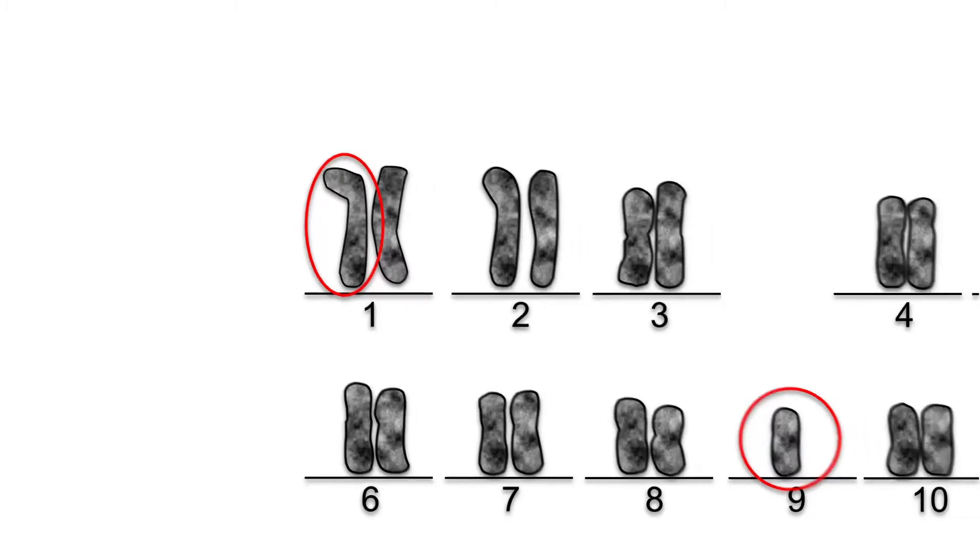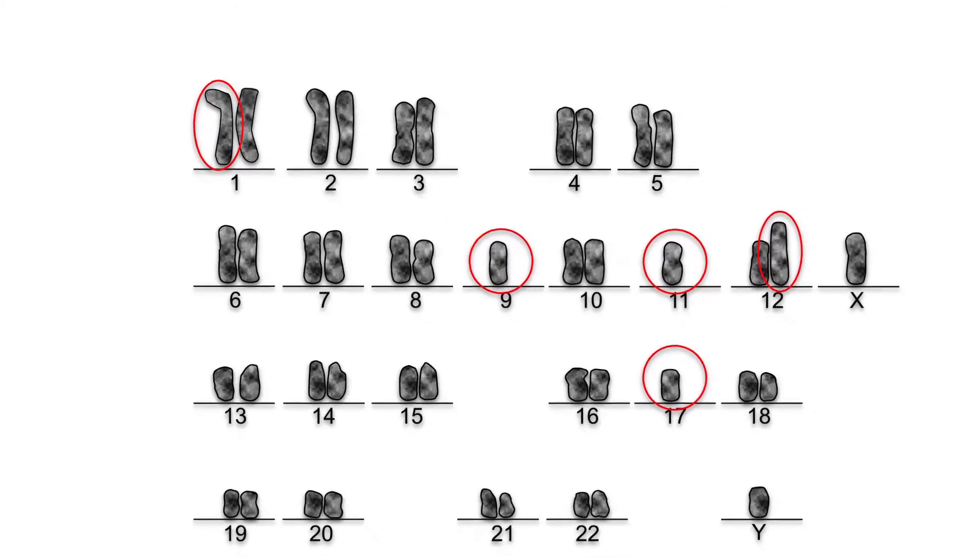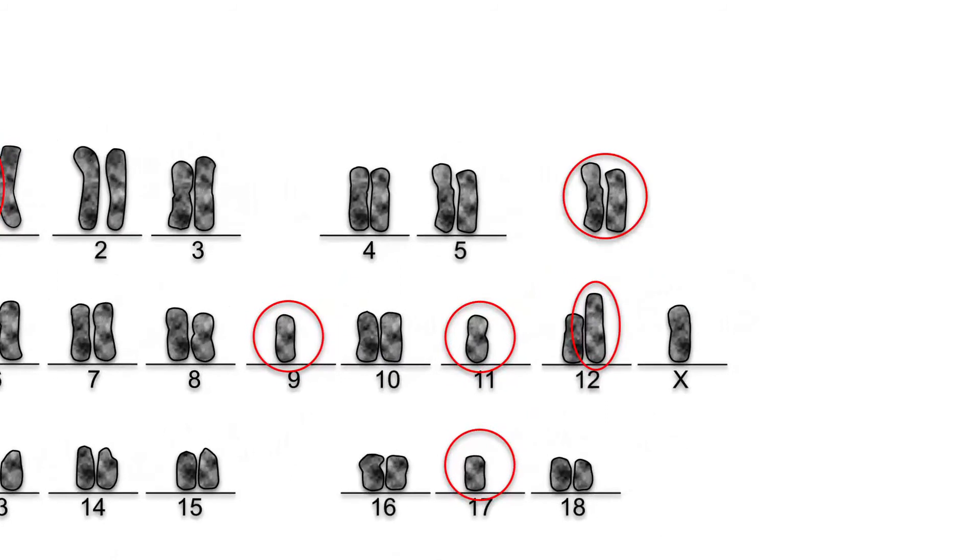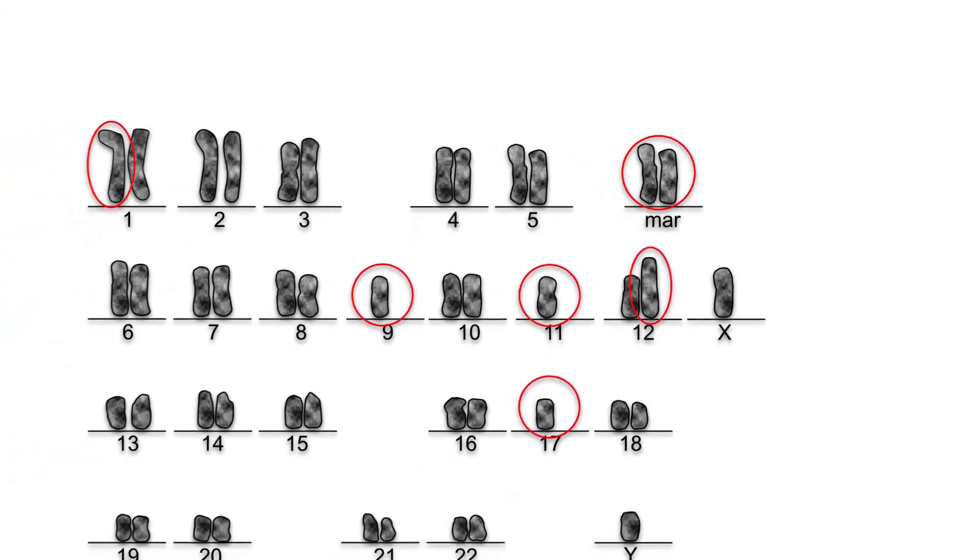This karyogram of a leukemic cell from a male patient displays several abnormalities. The red circles here denote loss of chromosomes, additional chromosomes such as the chromosome MAR, which stands for marker chromosome, and translocations.